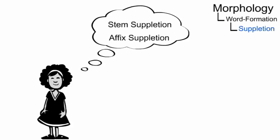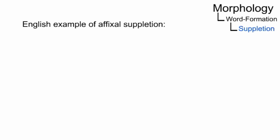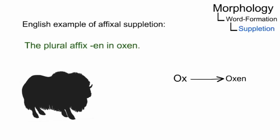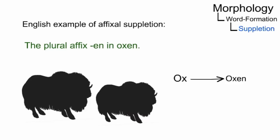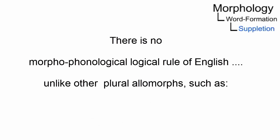It is customary to distinguish between affixal and stem suppletion. An English example of affixal suppletion is the plural affix -en, as in oxen. It is not motivated by any morphophonological rules of English, unlike other plural allomorphs such as boys and cups.